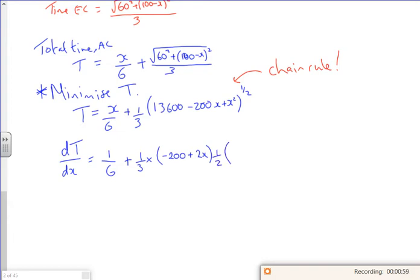Then I multiply by the original bracket, but I take one off the power, so that's minus a half. Now that's not the best looking equation to be dealing with, is it really?